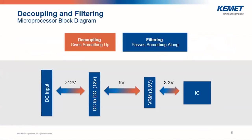To illustrate this, let's look at a microprocessor block diagram. We've got four main stages: the DC input, which is your power rail; the DC-to-DC conversion, where we step down that input voltage; then our voltage regulator; and finally our IC. Between all these, we've got both decoupling and filtering capacitors to absorb and deliver charge — whether it's a lower frequency situation, which requires higher capacitance values, or higher frequency, which needs lower capacitance values.